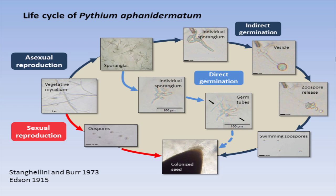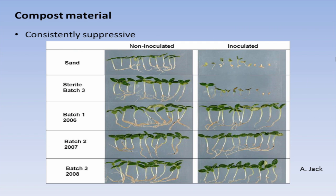A lot of research was done in our lab and elsewhere, and we found some great information. There are toxins that can lyse the zoospores. There is nutrient competition that can prevent infection. You can use biocontrol agents — Enterobacter, for instance — that could outcompete the nutrient source, those exudates, and mask the plant so that the swimming zoospore, which swims chemotactically towards the plant, can no longer detect it. We were using vermicompost particularly.